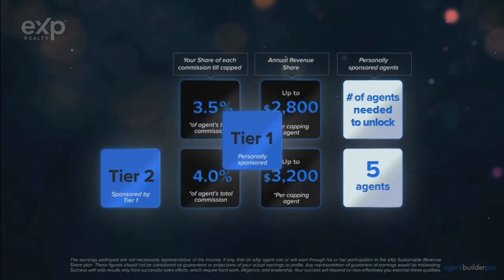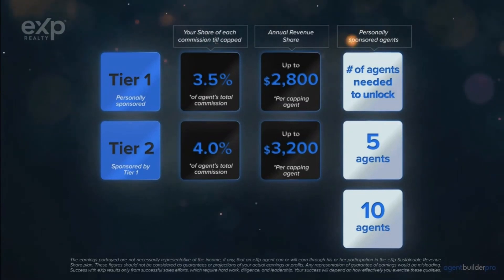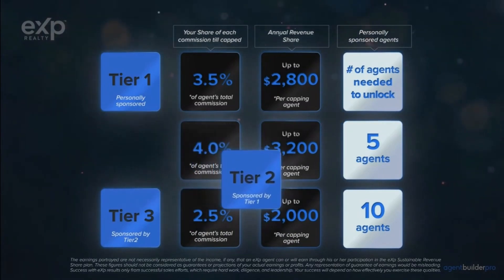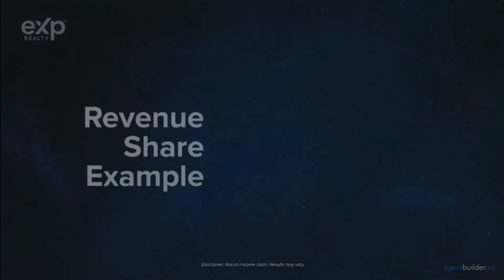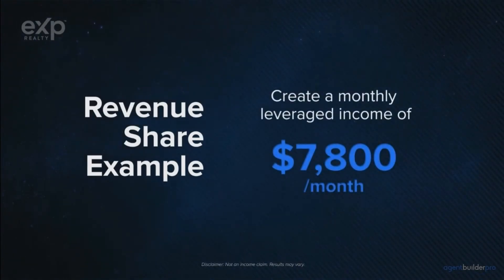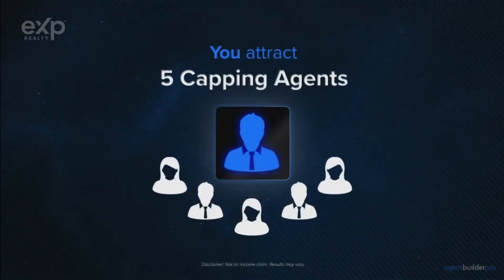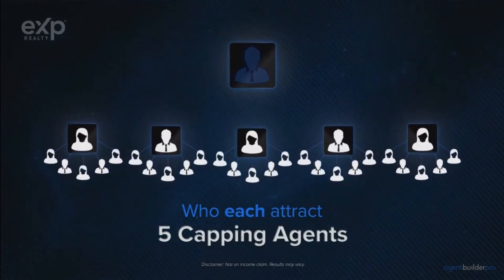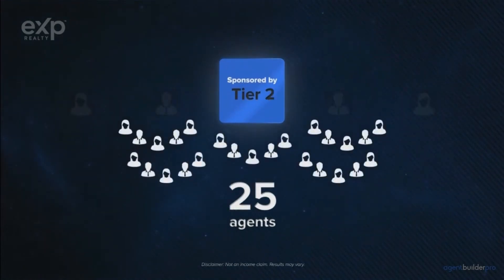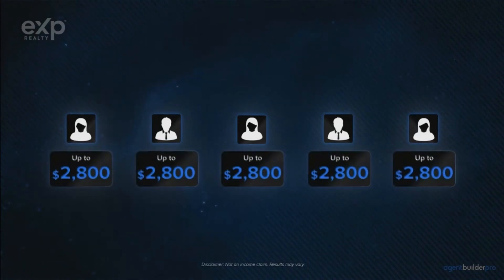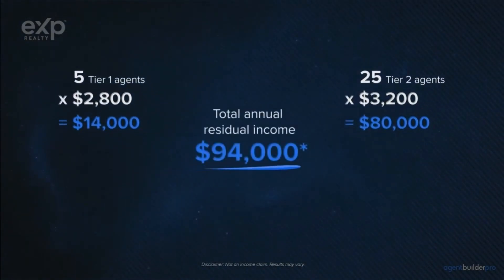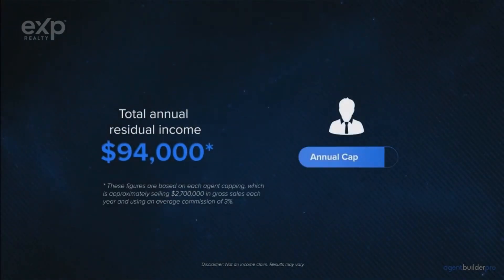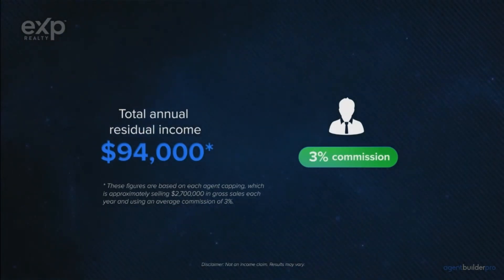For example, if you attract five producing agents you earn exponential share on tier one and tier two. If you attract ten producing agents, you earn on tiers one, two, and three. On tiers four through seven, you receive a reduced sharing called expansion sharing. Here's a quick example: you personally attract five capping agents, each of those five agents attracts five capping agents of their own — giving you five agents on tier one and 25 on tier two. For the five capping agents on tier one you earn up to $2,800 each, and for the 25 capping agents on tier two up to $3,200 each, giving you an annual leveraged income of up to $94,000. Note these figures are based on each agent capping, approximately selling $2.7 million of real estate per year at an average 3% commission.